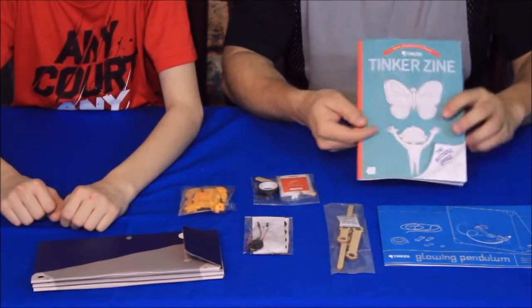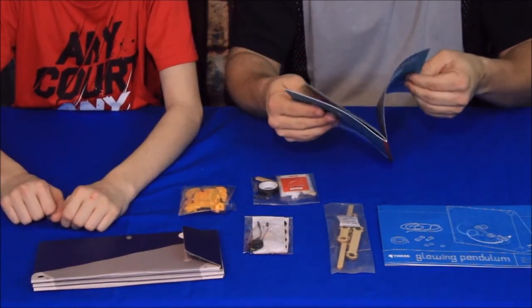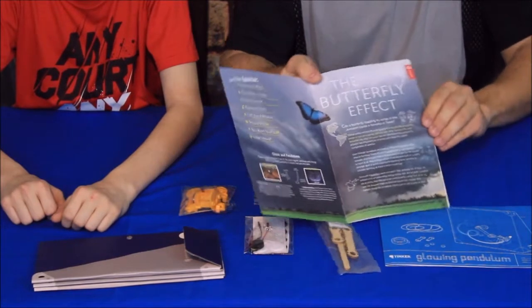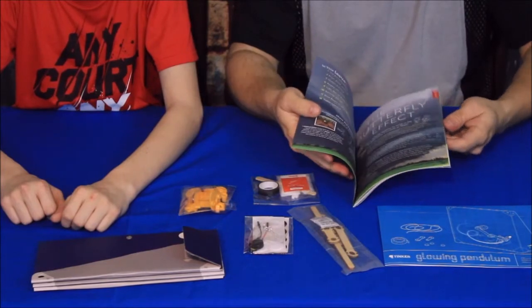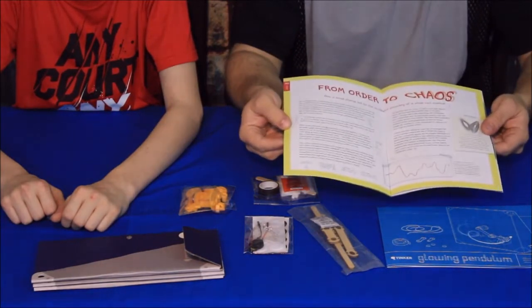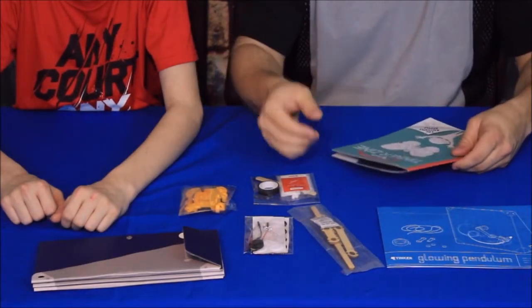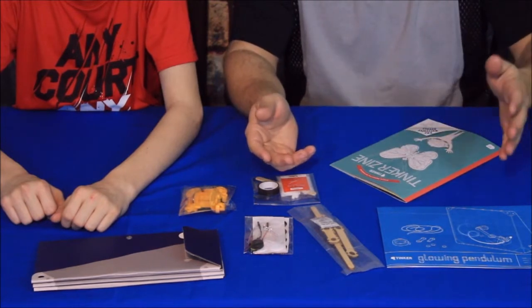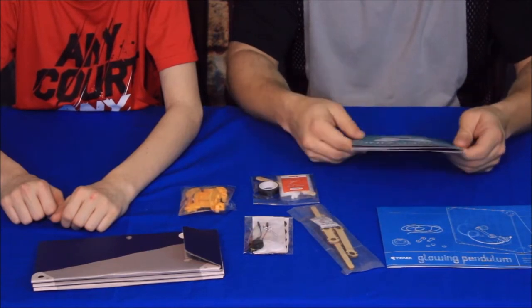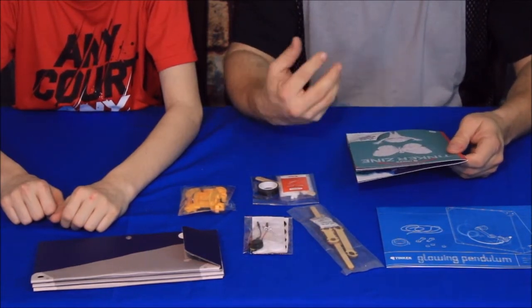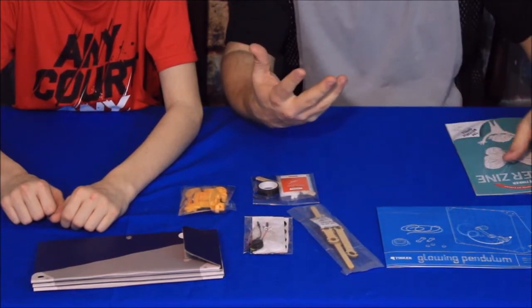So of course we'll start with the Tinker Zine here. And as you open up the Tinker Zine it talks about some different things like for example the butterfly effect. Of course there's a movie by that title and it deals in something called chaos theory. Chaos theory is just kind of the idea of something happens over here, can it or does it affect something that happens way over here on the other side of the planet or whatever.